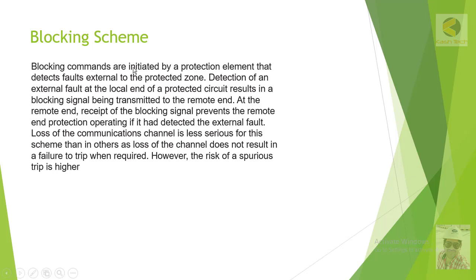A blocking command is initiated by a protection element that detects fault external to the protected zone. Detection of an external fault at the local end of the protected circuit results in a blocking signal being transmitted to the remote end. At the remote end, the received blocking signal prevents the remote end protection from operating if it had detected the external fault. Loss of the communication channel is less serious for this scheme than in others, as loss of the channel does not result in a failure to trip when required. However, the risk of spurious tripping is higher.